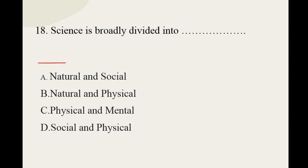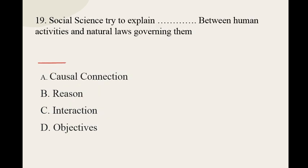Question number eighteen: Science is broadly divided into how many parts? Options are natural and social, natural and physical, physical and mental, social and physical. The correct option is natural and social. Question number nineteen: Social science tries to explain what between human activities and natural laws governing them? Options are causal connection, reason, interaction, and objectives. The correct option is causal connection.